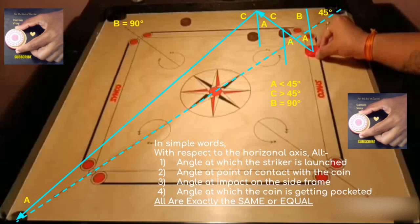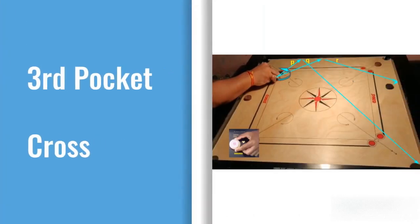So, the next time when you are playing the third pocket shot, think of it as a geometry problem. Things become a bit more complicated when we come to the third pocket cross variant.